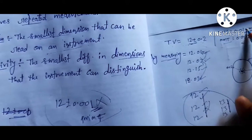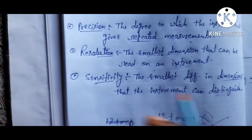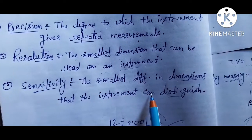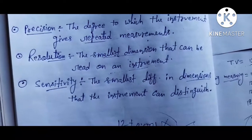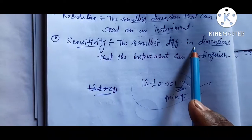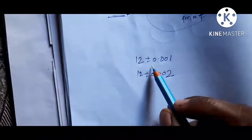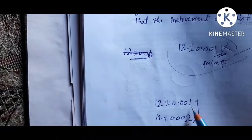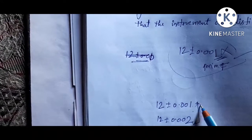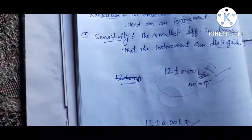Sensitivity is the smallest difference in dimensions that an instrument can distinguish. For example, dimensions 12.001 and 12.002 — the difference between these two can be distinguished by a micrometer. That ability to detect the smallest differentiation is known as sensitivity.